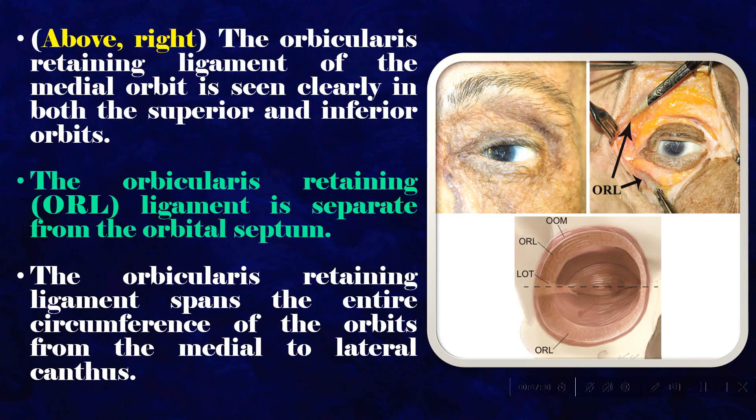The orbicularis retaining ligament of the medial orbit is seen clearly in both the superior and inferior orbits.